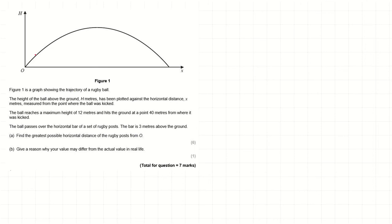We've got the graph showing the trajectory of a rugby ball. The height of the ball above the ground, h meters, has been plotted against the horizontal distance measured from the point where the ball was kicked. Height goes upwards and horizontal distance goes across, so it's kicked here and goes up and hits the ground. The ball passes over a horizontal bar of a set of rugby posts — the bar is three meters above the ground. Let's put all of that into the diagram.